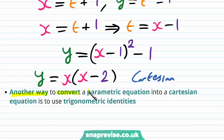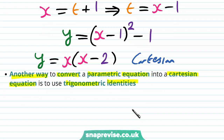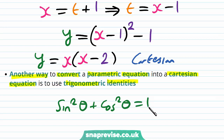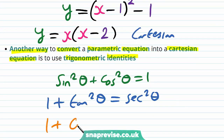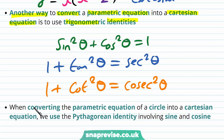Another way to convert parametric equations into a Cartesian equation is to use trigonometric identities when appropriate. The important trigonometric identities are: sine squared theta plus cosine squared theta equals 1; 1 plus tan squared theta equals sec squared theta; and 1 plus cot squared theta equals cosec squared theta. When converting the parametric equation of a circle into a Cartesian equation we use the Pythagorean identity: sine squared theta plus cosine squared theta equals 1.